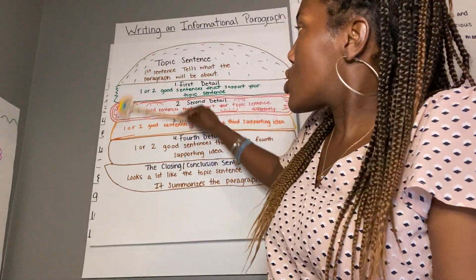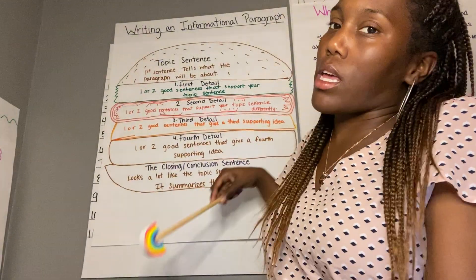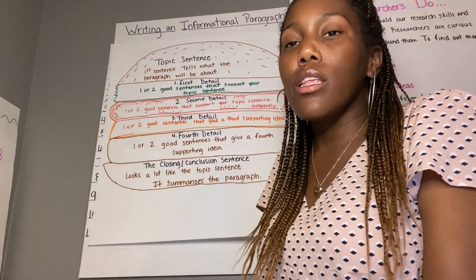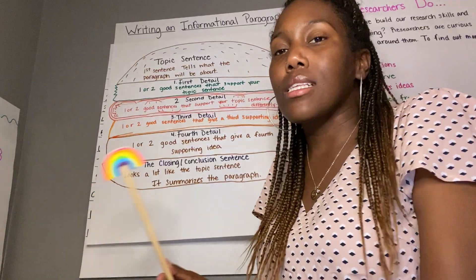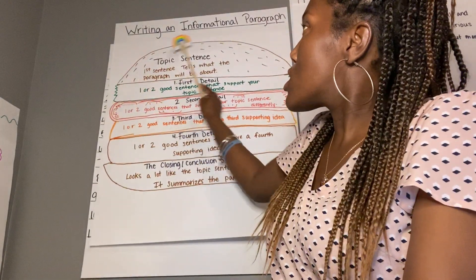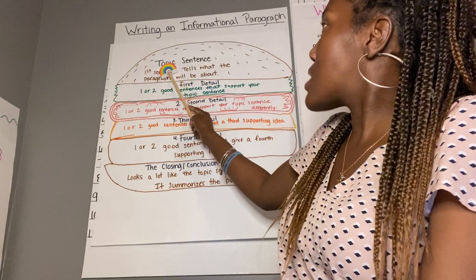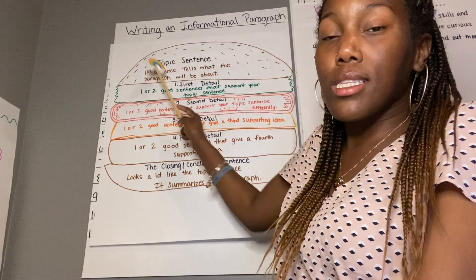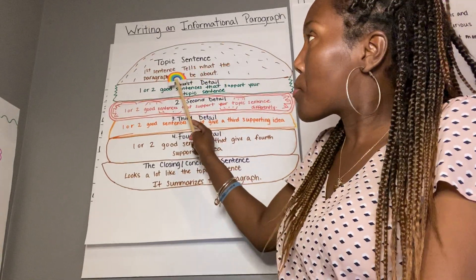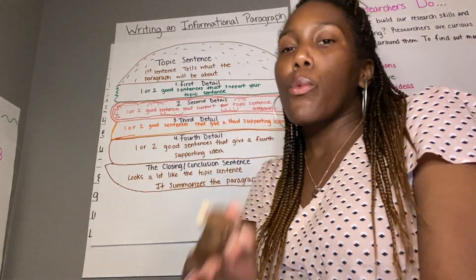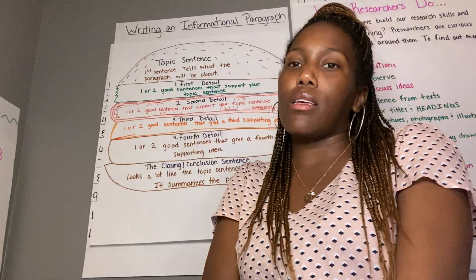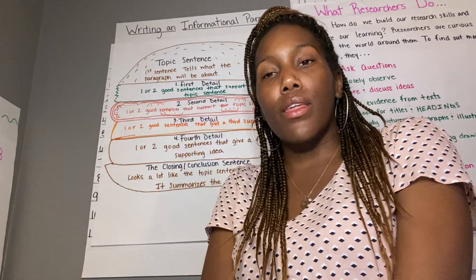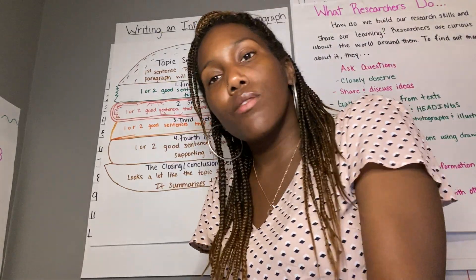I made this chart, and I know you're saying it looks like a hamburger — and it is. A good paragraph has lots of different parts to it. The first part that we need is a topic sentence. The topic sentence is going to be the first sentence in our paragraph, and it's going to tell us what the paragraph will be about. What is our paragraph about today, scholars? How birds use their feathers to survive.